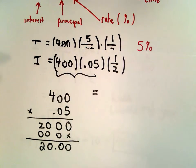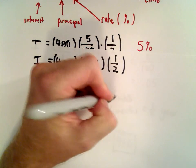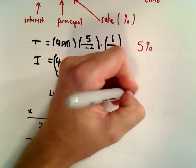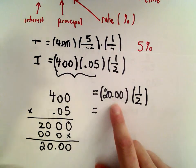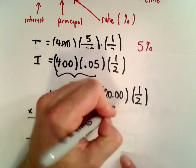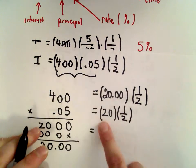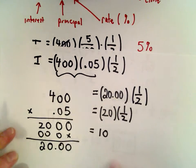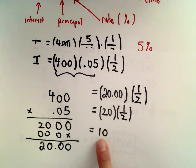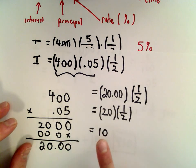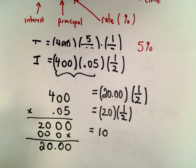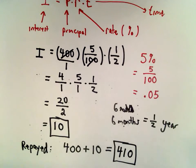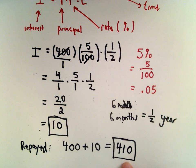The interest equals 20.00 multiplied by 1/2. Twenty times one-half equals ten, which is the same interest we calculated before. Once we include the original principal, the amount repaid is $410.